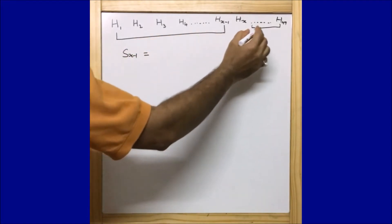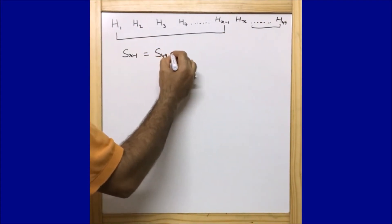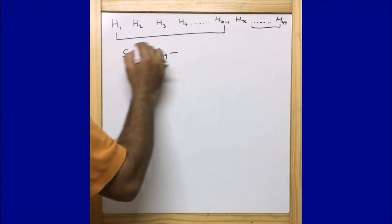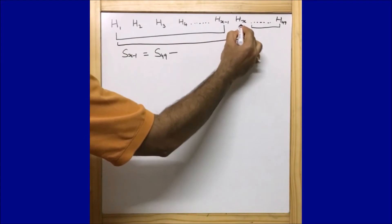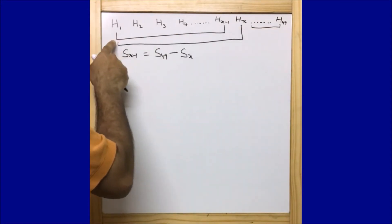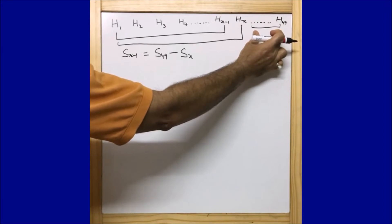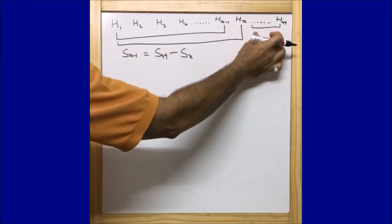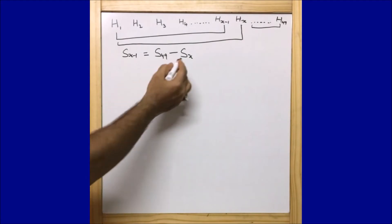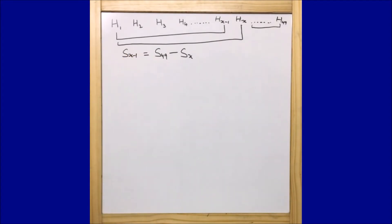To find the sum of houses following x, we take the total sum of all 49 houses minus the sum up to and including house x. So the sum of houses following x equals S49 minus Sx. Therefore our equation is: S(x minus 1) = S49 minus Sx.